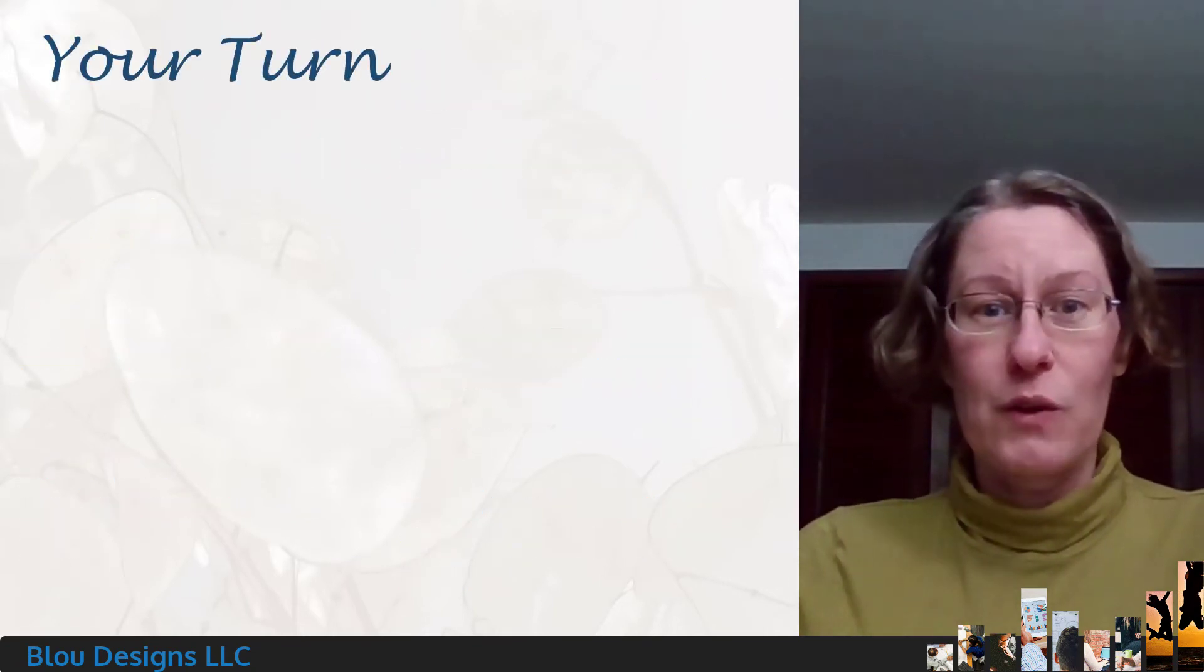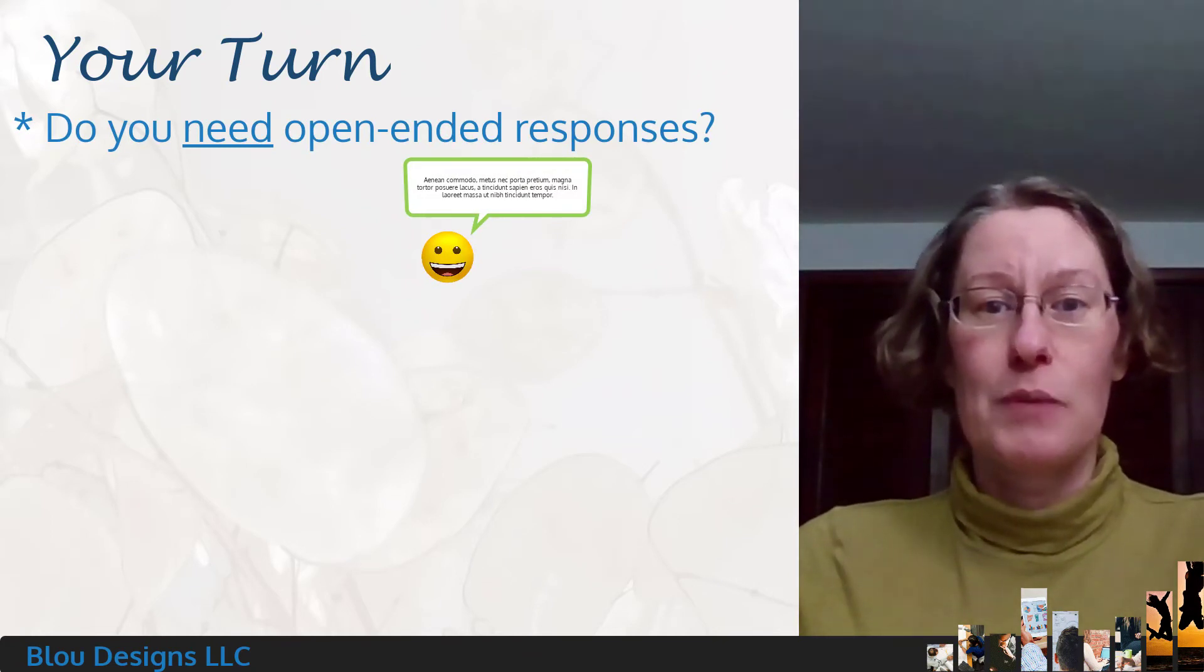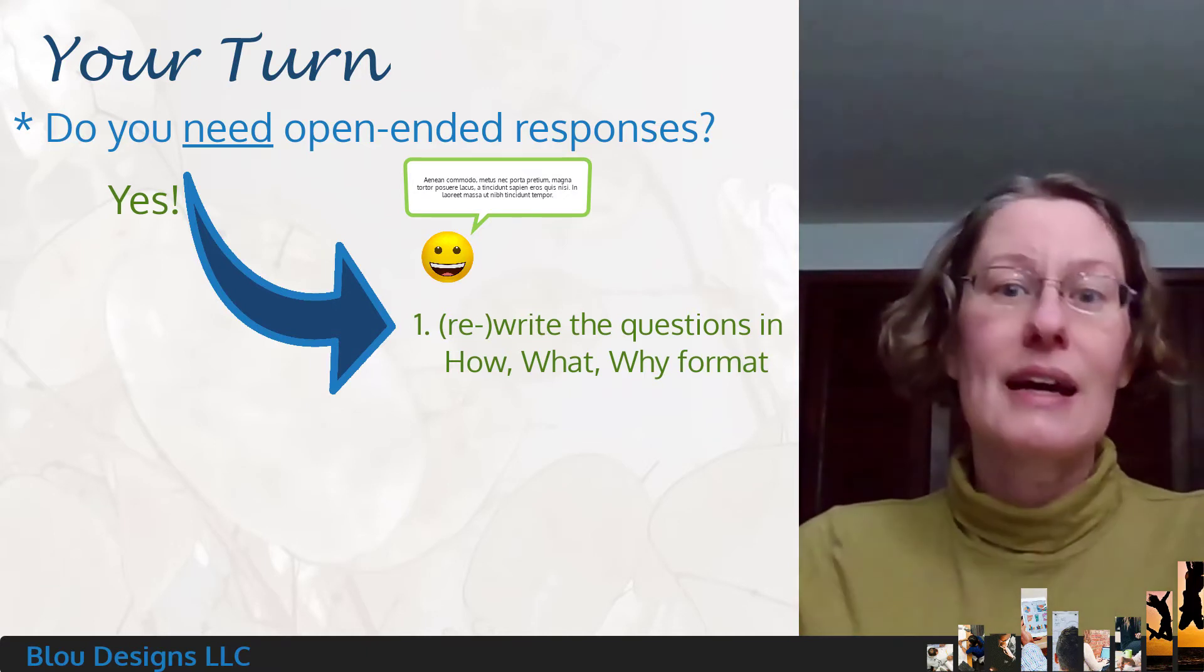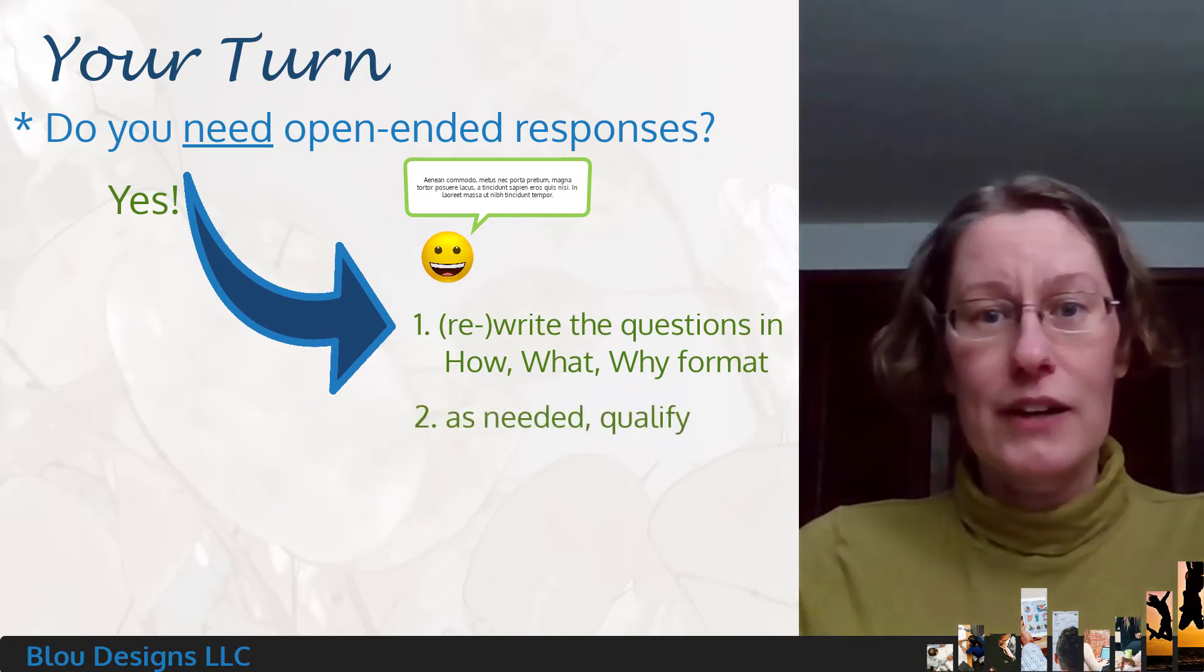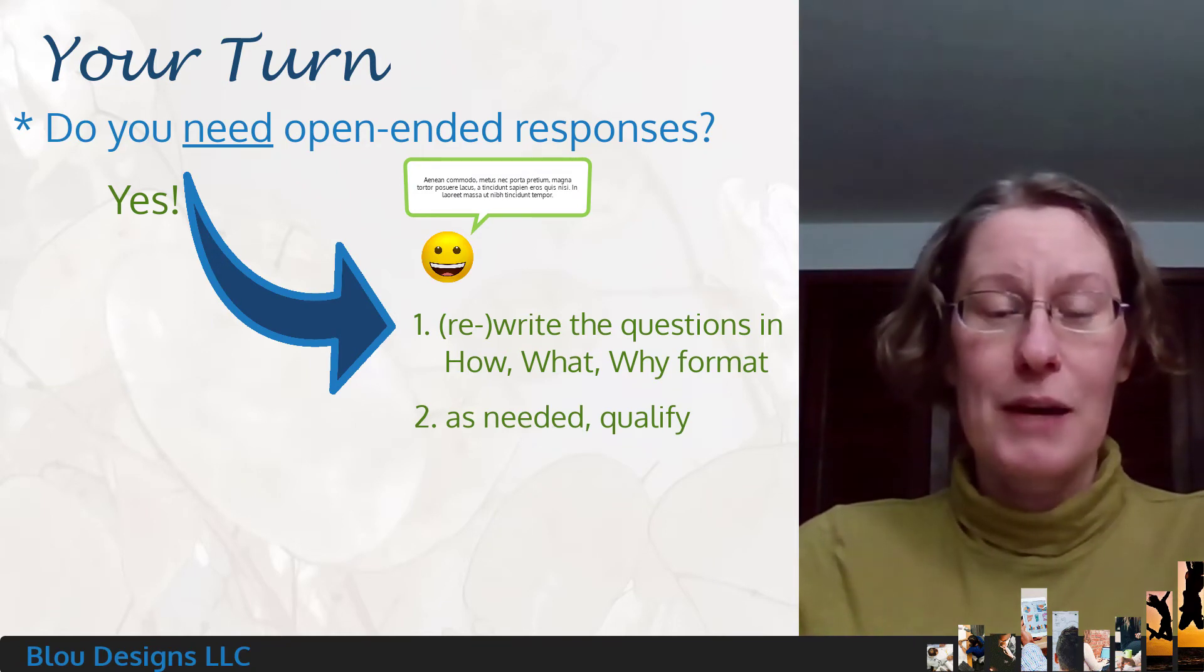So with your own survey questions, figure out which questions really need that open range of responses, then write them as how, what, or why questions, and, as needed, add a qualifier to keep respondents focused on the range of things you want them to talk about in their answers.